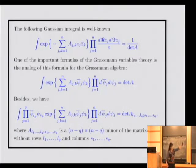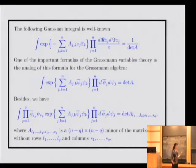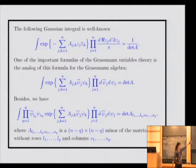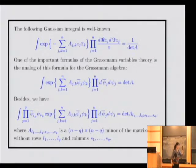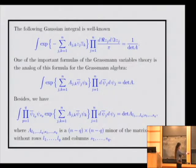The following Gaussian integral is well known: if we take such an exponent and integrate over the real and imaginary parts, we obtain one divided by the determinant. Of course, here we assume that A is a positive definite Hermitian matrix for convergence. One of the most important formulas of Grassmann variables — perhaps the main formula — is that if we take the integration over ψ_j and ψ̄_j, we obtain not one divided by the determinant but the determinant itself. Here we can take any matrix R because there is no convergence problem — the exponent is only a polynomial. We will use this formula below.